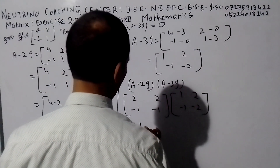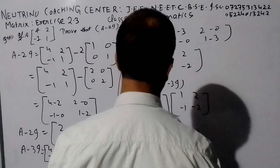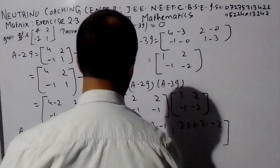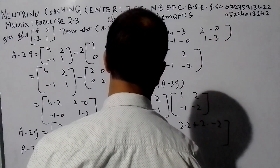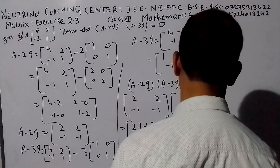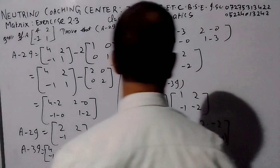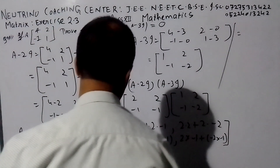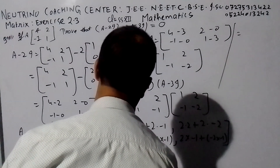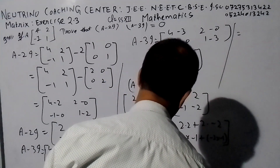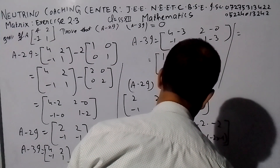Two into one plus two into minus one; two into two plus two into minus one; minus one into minus one; two into minus one; minus two into minus one. So we got: 2 minus 2, 4 minus 4, minus 1 plus 1, minus 2 plus 3. The value is 0, 0, 0, 0.